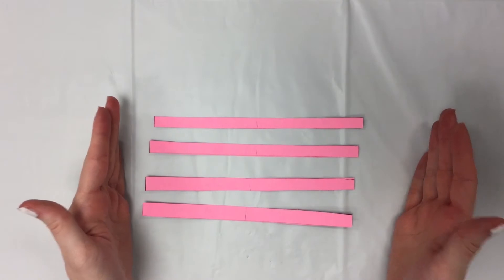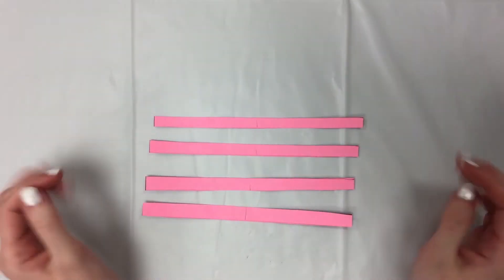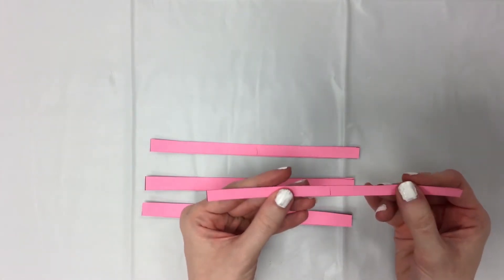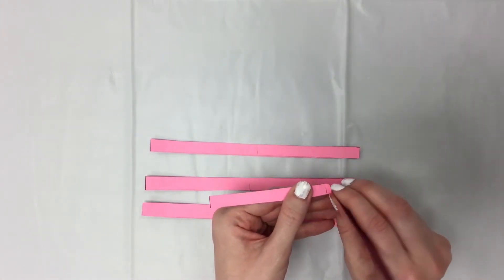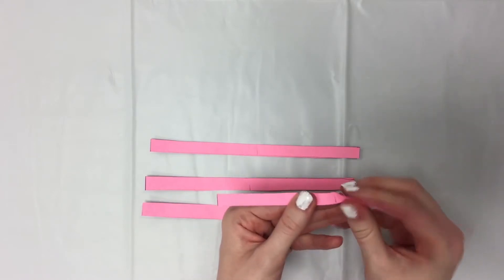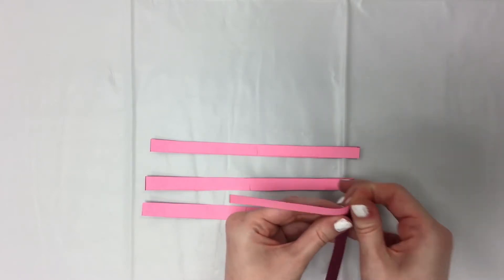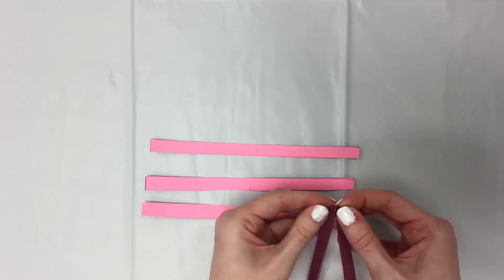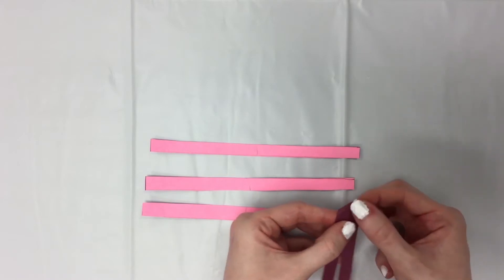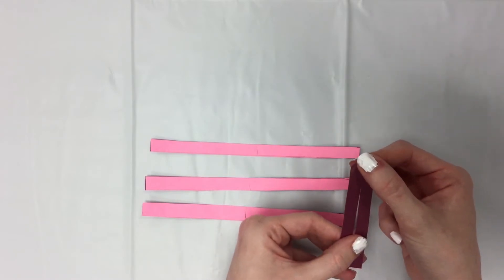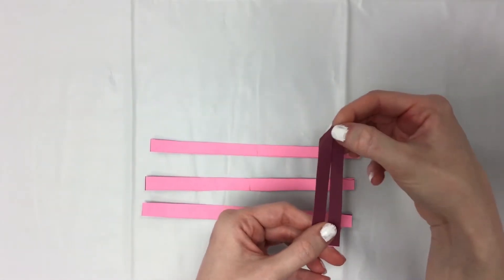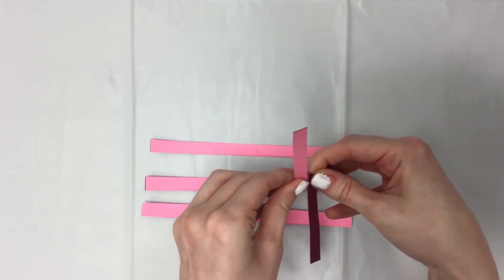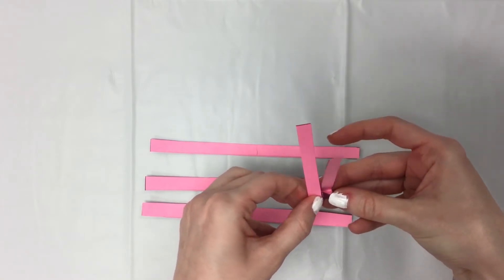So once we have our four strips and we've marked the centers of them, we are ready to fold them. If you take your first one, start on the right side and fold it down right at that center line. Do the same on the left side. So you should end up with sort of a pointy top and then just two long strips. And then we're going to fold the left side up towards you and the right side back.